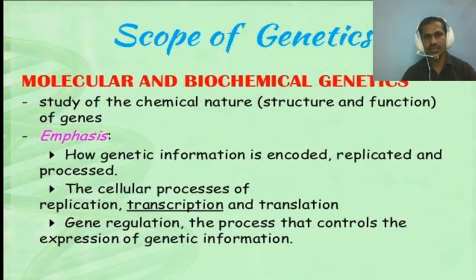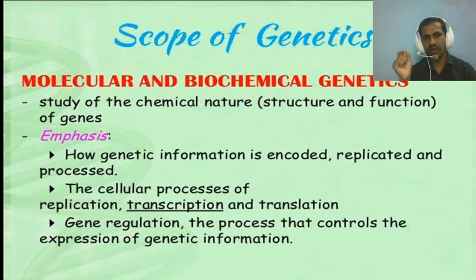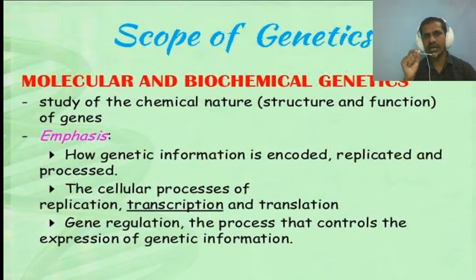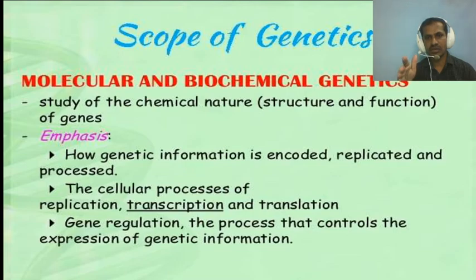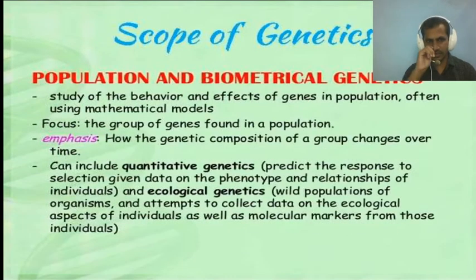The second scope is molecular and biochemical genetics, which involves the study of the chemical nature, structure, and function of genes — both organic and inorganic, macro and micro molecules present in the body. It mainly emphasizes information encoding, DNA replication, cellular replication, transcription, translation, and gene regulation — controlling the expression of genetic information.